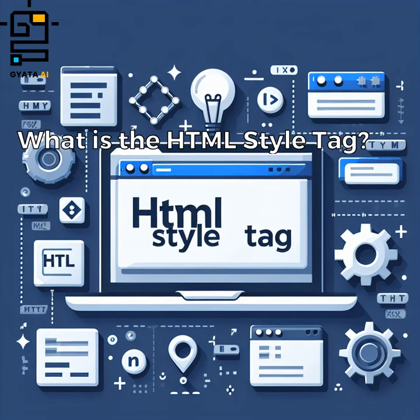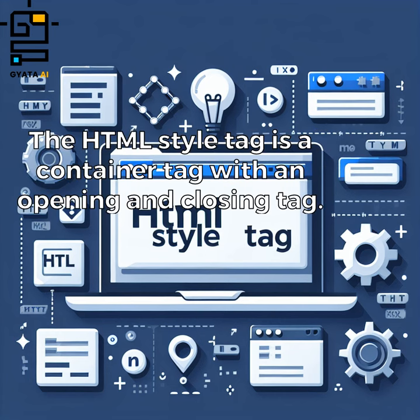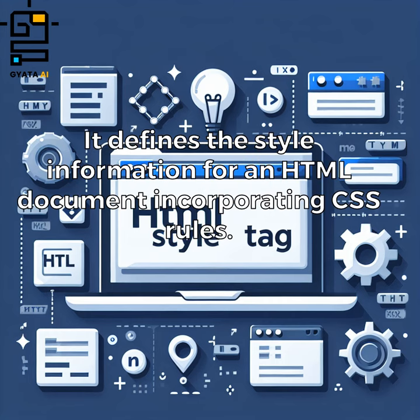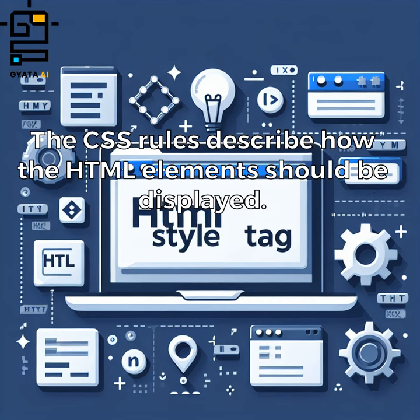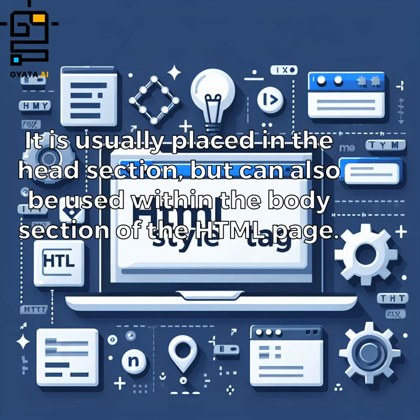What is the HTML style tag? The HTML style tag is a container tag with an opening and closing tag. It defines the style information for an HTML document, incorporating CSS rules. The CSS rules describe how the HTML elements should be displayed. It is usually placed in the head section, but can also be used within the body section of the HTML page.